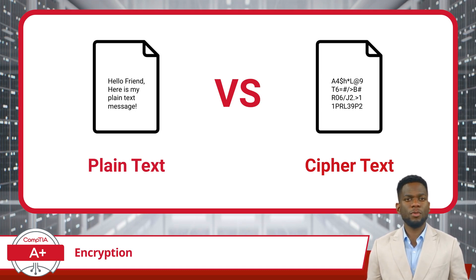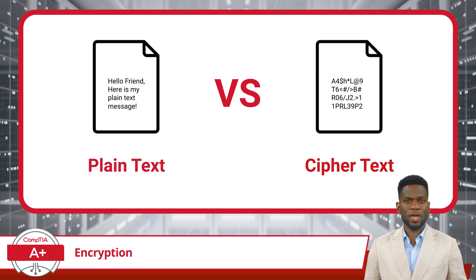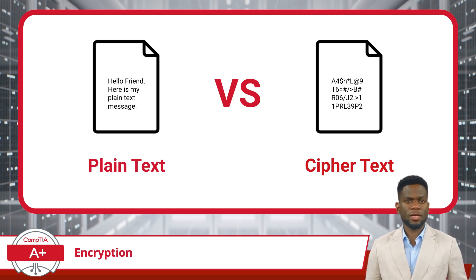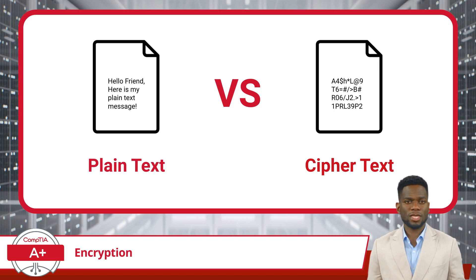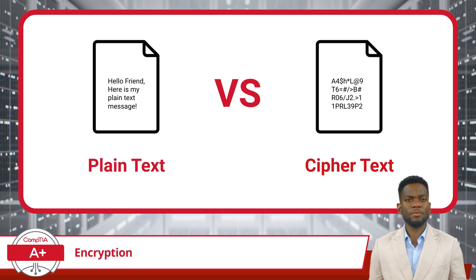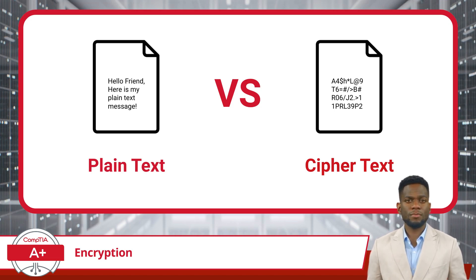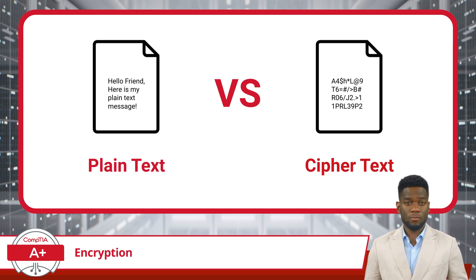But here's where the plot thickens. When we aim to safeguard our data or message, especially in the digital domain, we resort to encryption. This encrypted form of our plain text is what we refer to as ciphertext. Think of ciphertext as a coded message — to the untrained eye, it appears as mere gibberish.